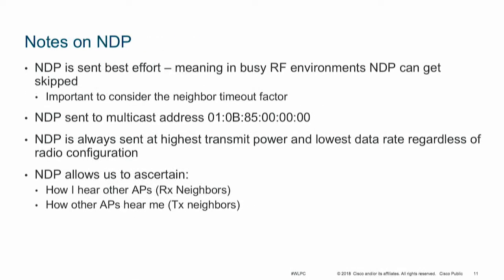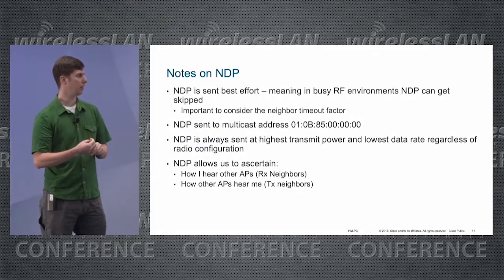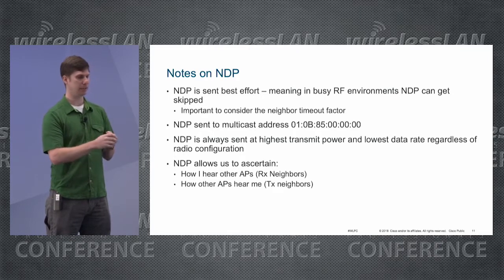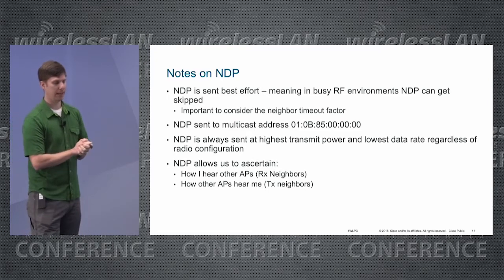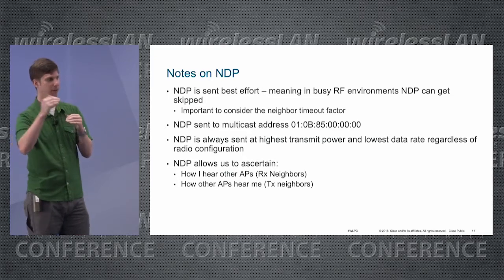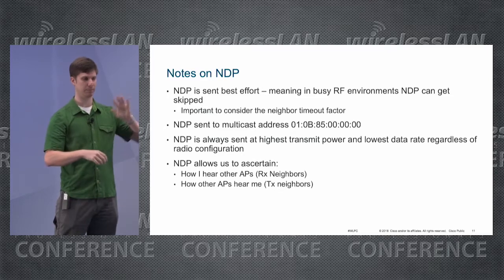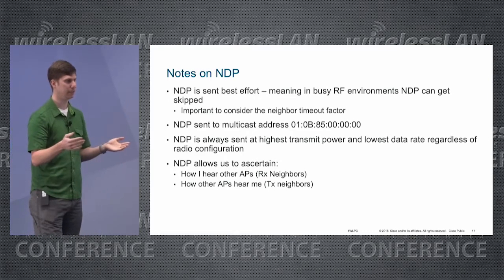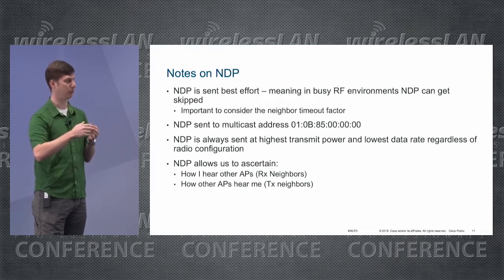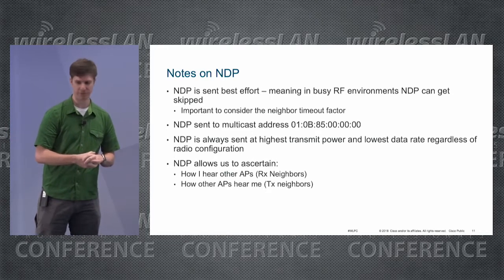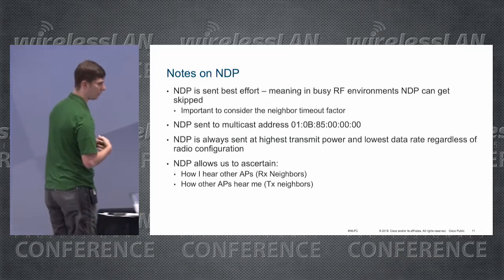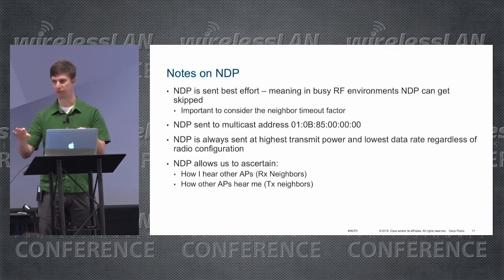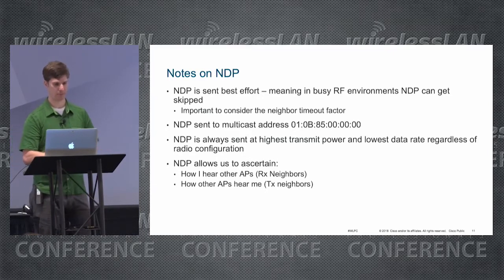A couple of notes on NDP. NDP is sent best-effort, so in busy RF environments NDP might not get transmitted because more important traffic takes priority. This is why there's a feature called neighbor timeout. If you're in a challenging RF environment, you may want to increase your neighbor timeout. By default, neighbor timeout is a multiplying factor — multiply times five the channel scan interval, so 180 seconds times five equals 15 minutes. If after 15 minutes your AP no longer hears a neighbor, that neighbor gets timed out. If you ever want to sniff NDP, it's sent on a multicast address. NDP is always sent at highest transmit power and lowest data rate regardless of radio configuration — so even if you're trimming low data rates, NDP will still go out at the lowest data rate in 2.4 or 5 GHz.